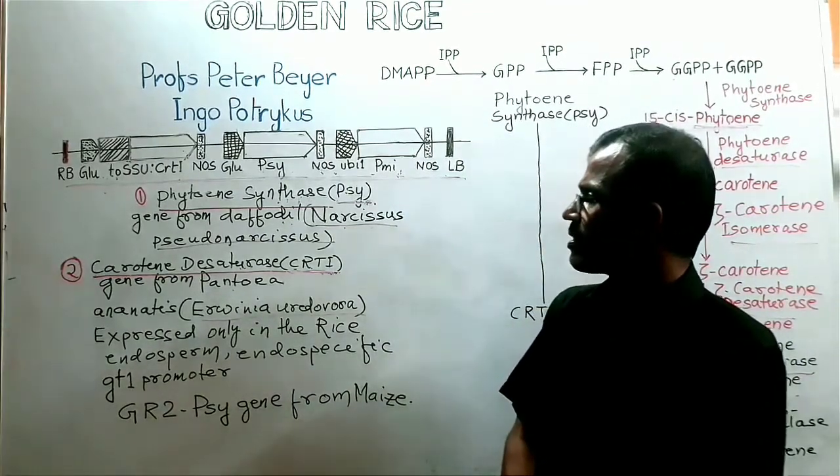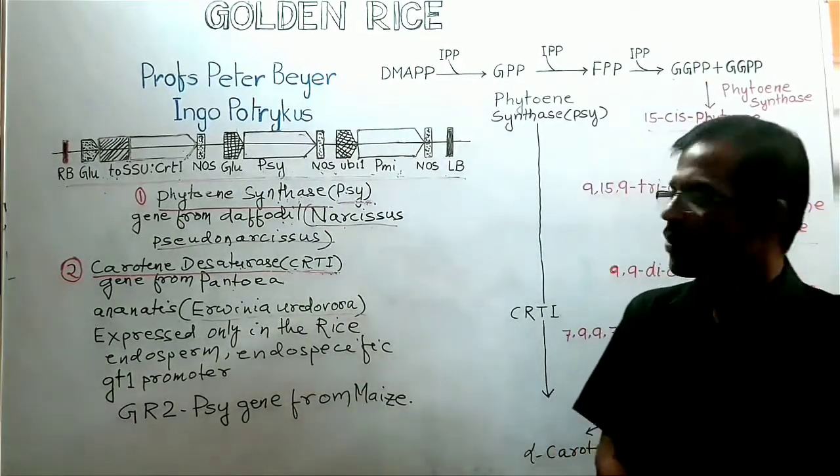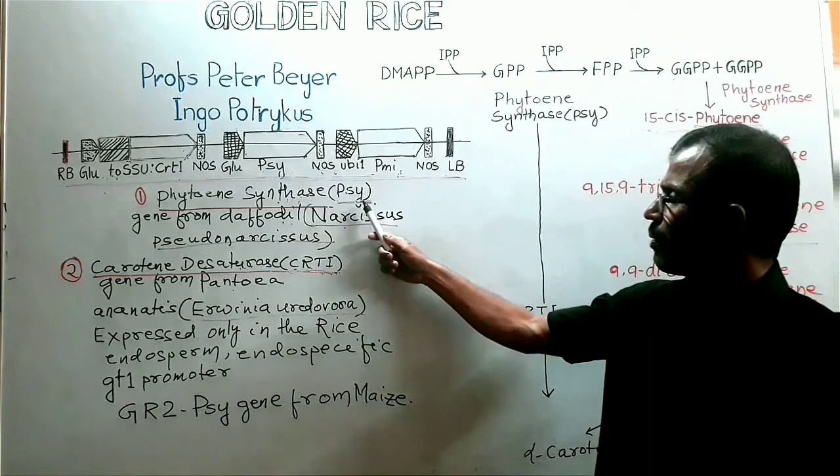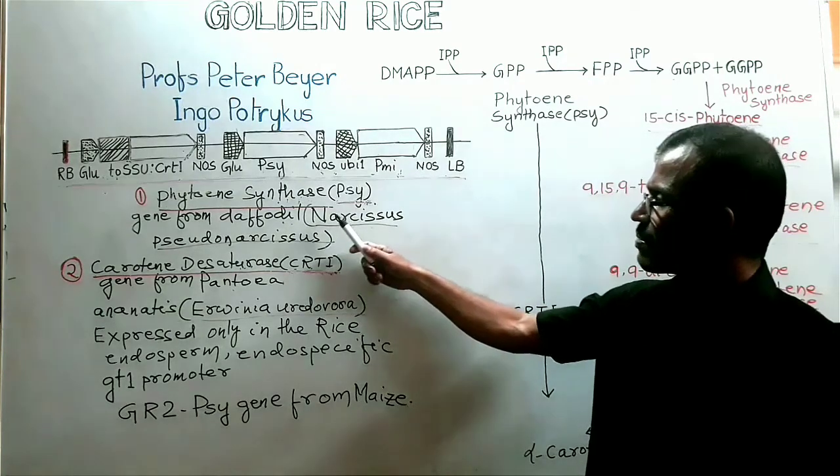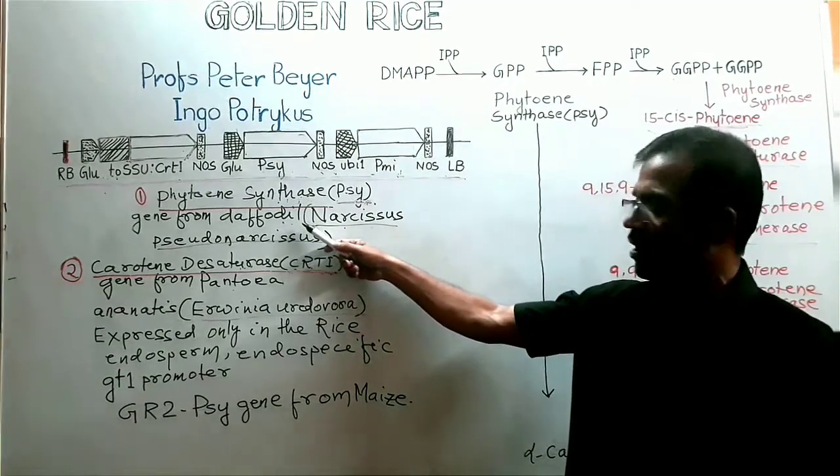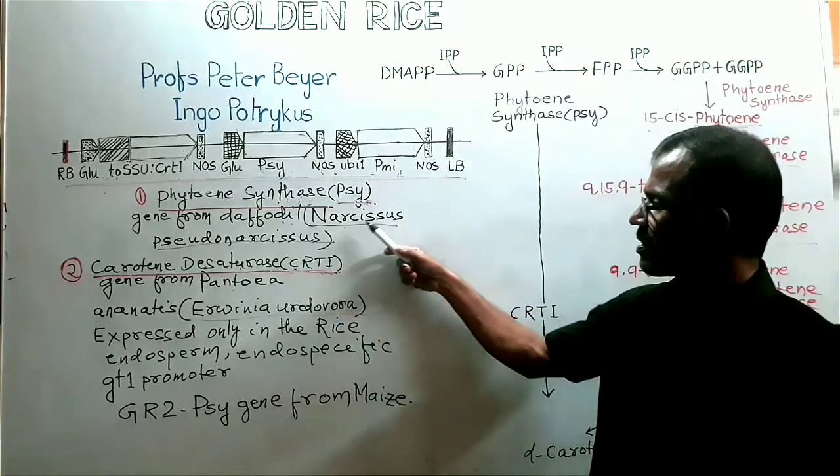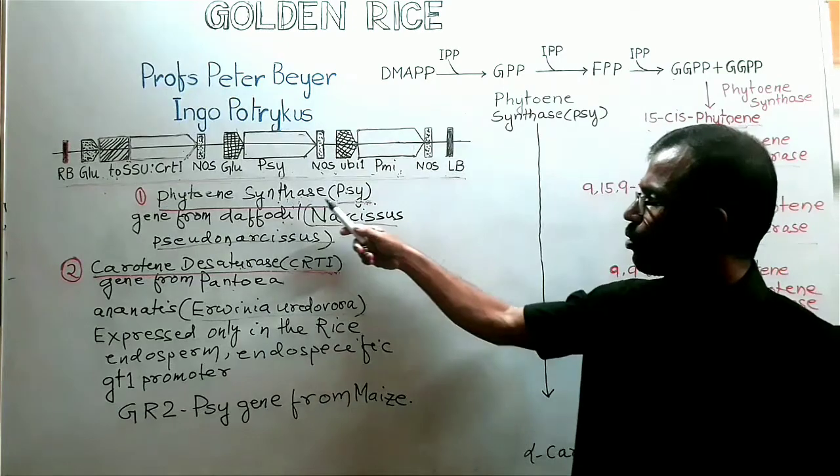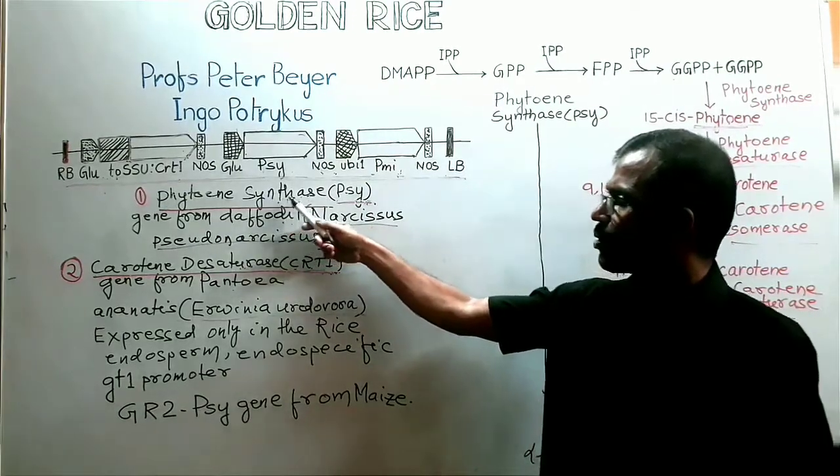The golden rice expresses two transgenes. One transgene is known as PSY gene. PSY gene that has been obtained from daffodil, which is known as Narcissus pseudonarcissus. PSY gene codes for the enzyme phytoene synthase.